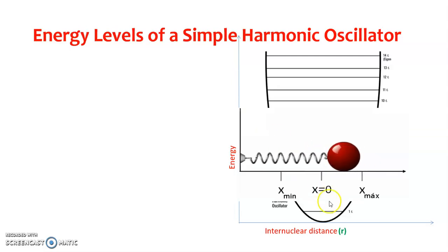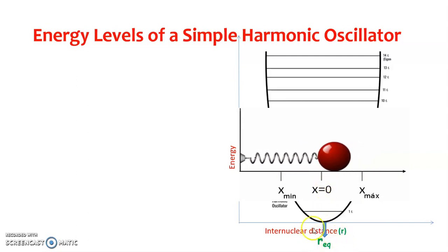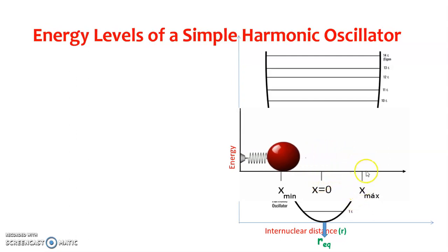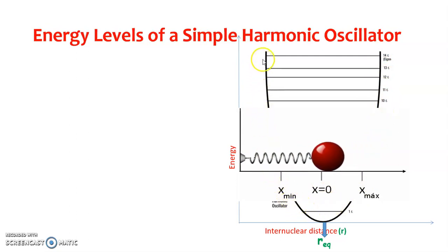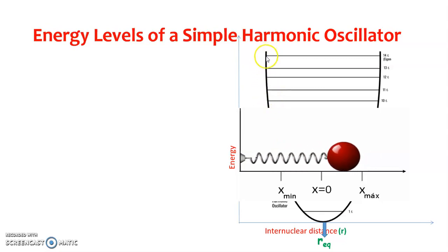If we stretch the hydrogen atom from its equilibrium inter-nuclear distance, the stretching leads to an increase in energy level. Similarly, compression also leads to an increase in energy level. The energy increases like a parabola in both directions from the equilibrium position.